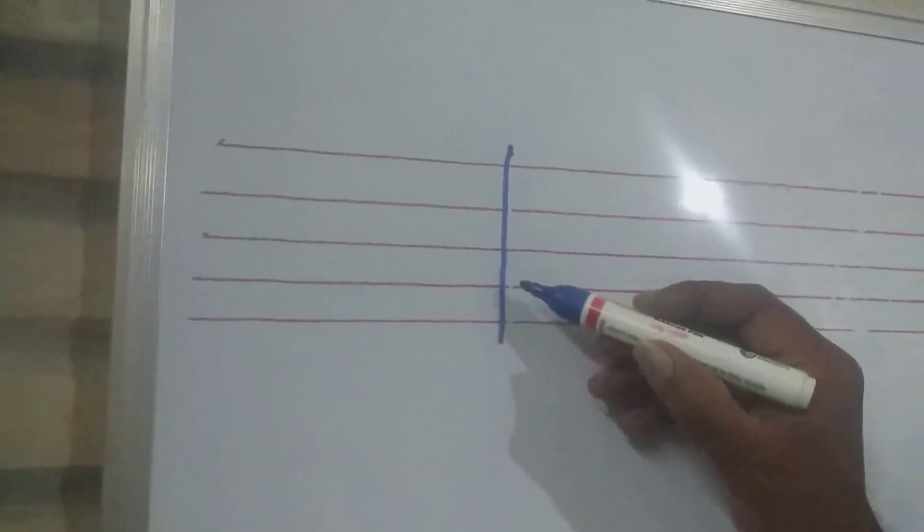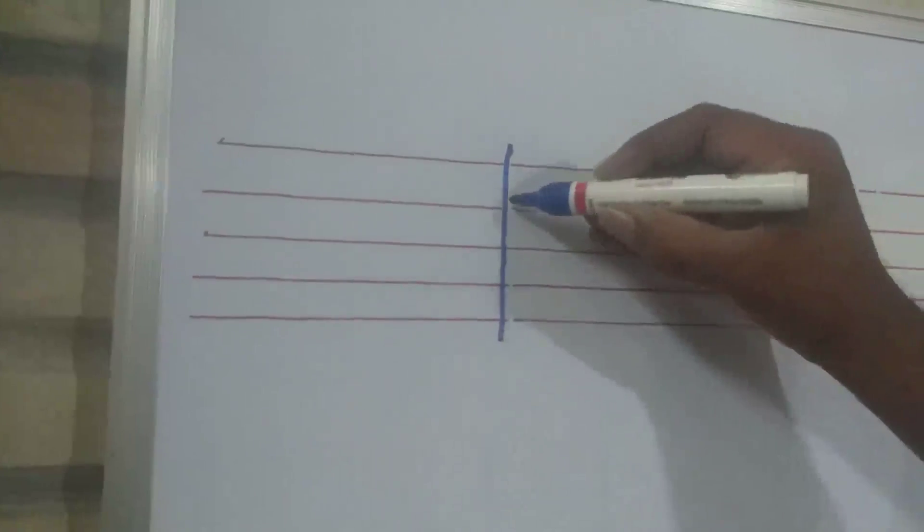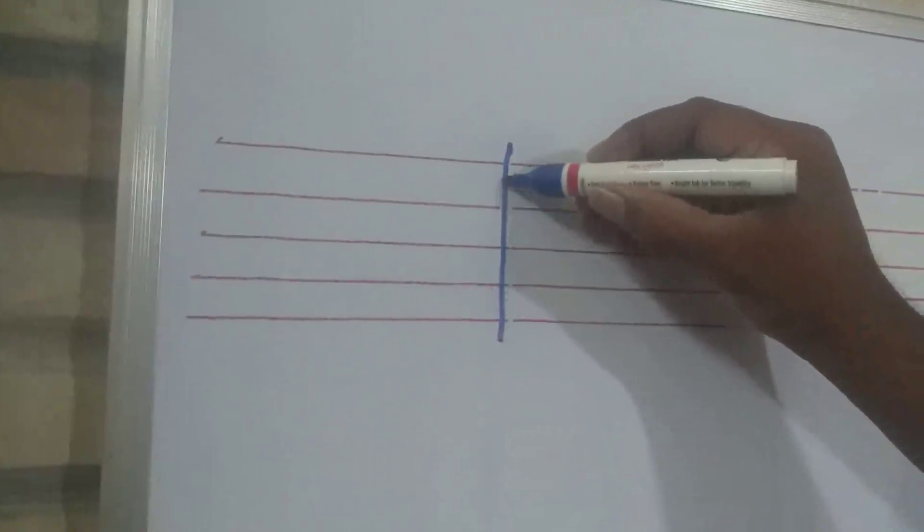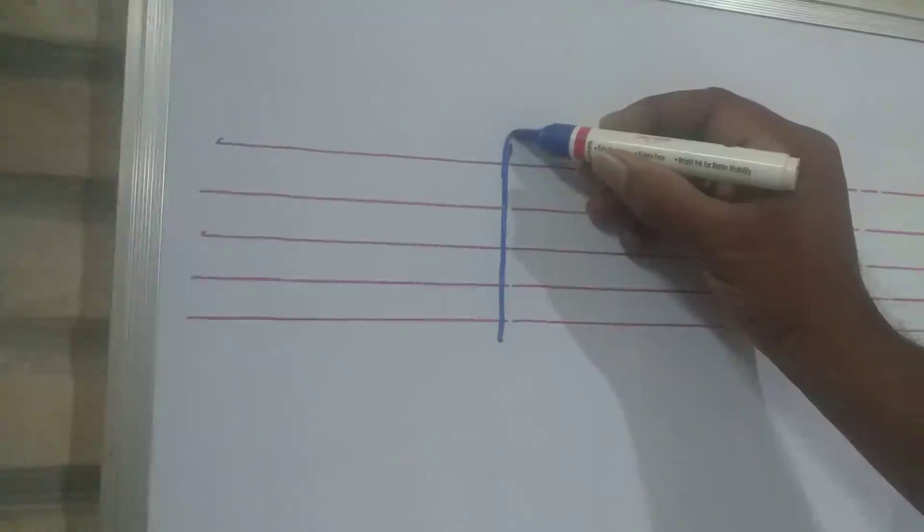Second line, third line, fourth line. You have to start with the fourth line like this, slowly go up and curve.